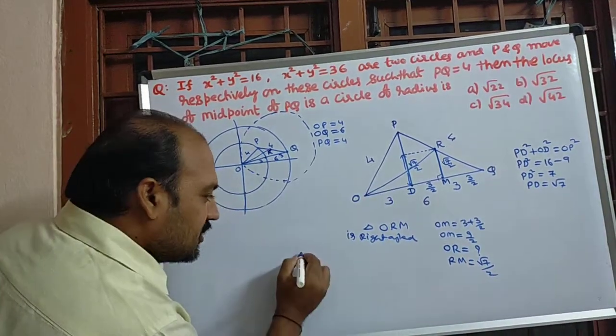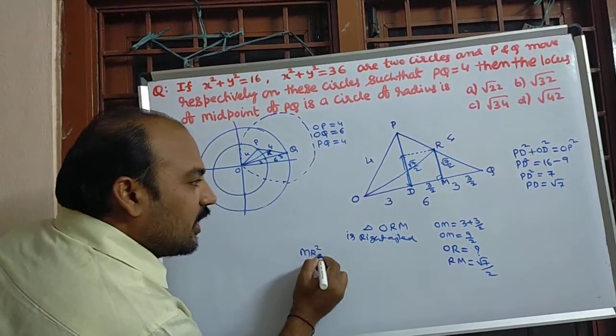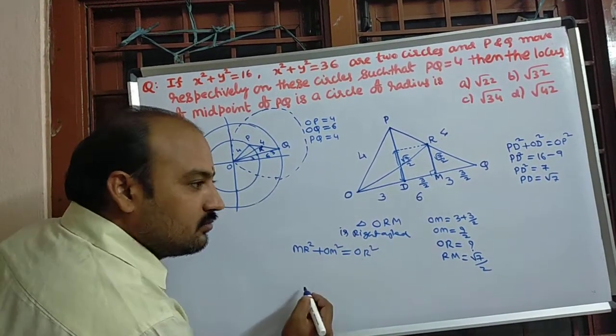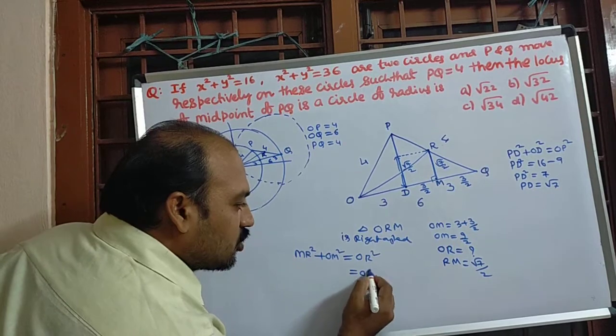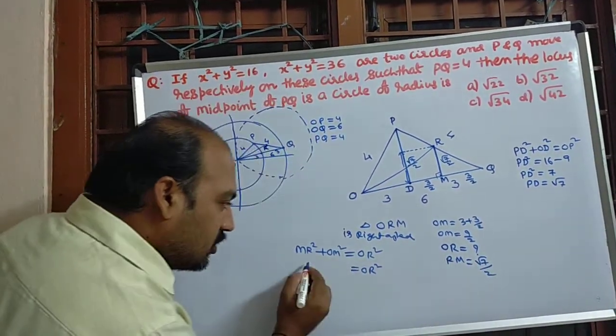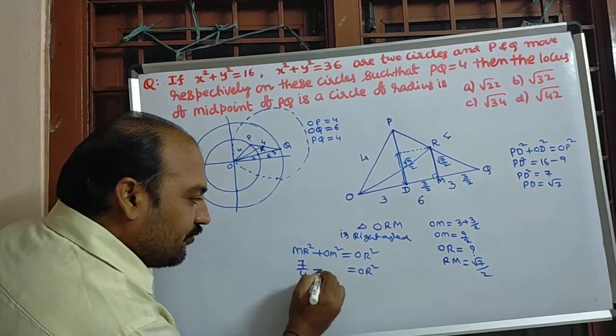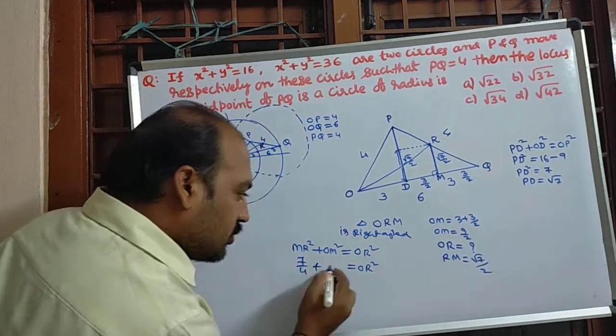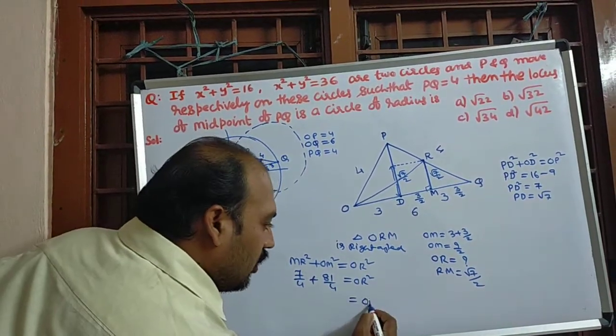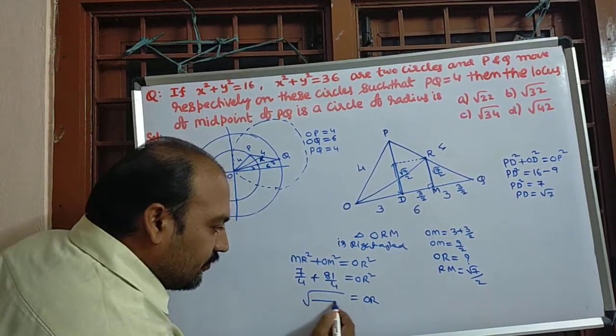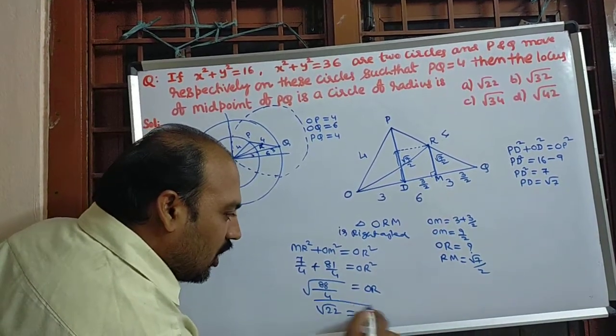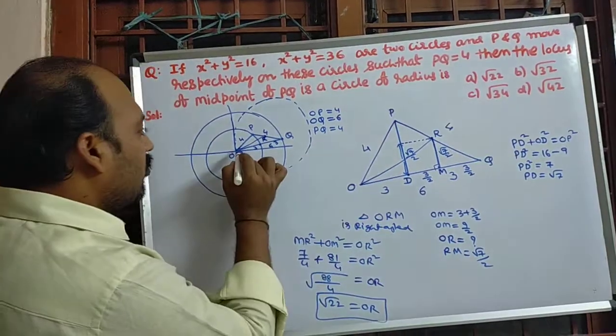So by Pythagoras theorem, RM² + OM² is equal to OR². OR² is equal to MR², RM², √7/2 whole square = 7/4, plus OM² = 9/2 whole square = 81/4. OR equal to square root of LCM is same, 88. So √22 is equal to OR.